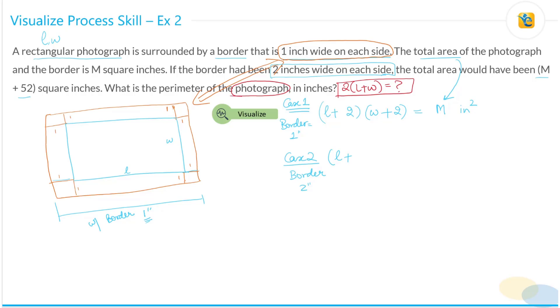Likewise, you'll have to add two inches and two inches to the width. And this area is M plus 52. So this is and this is in square. So this is your equation one. This is your equation two. And what do we need to figure out? We need to figure out twice into L plus W.